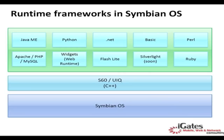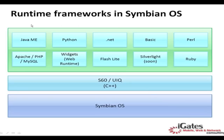Symbian is built like any other regular operating system. Looking at the architecture, at the bottom we have the Symbian OS and beneath it the hardware. On top of the Symbian OS we have the UI framework, which supplies all the UI widgets and application frameworks. On top of that we can place runtime frameworks such as J2ME, Python, .NET, Basic, Pearl, and others.